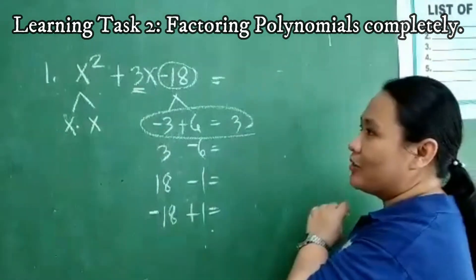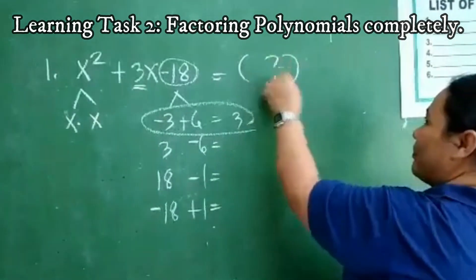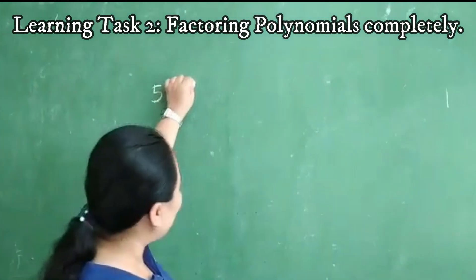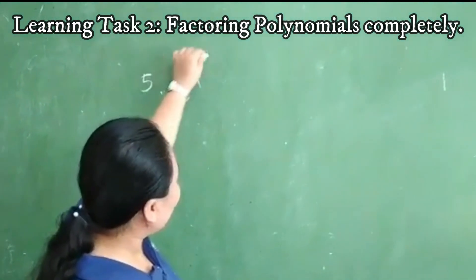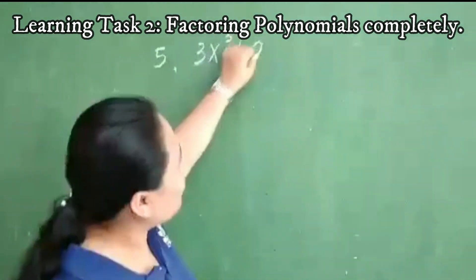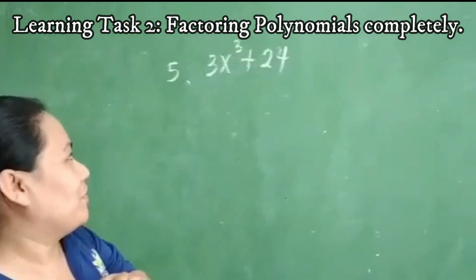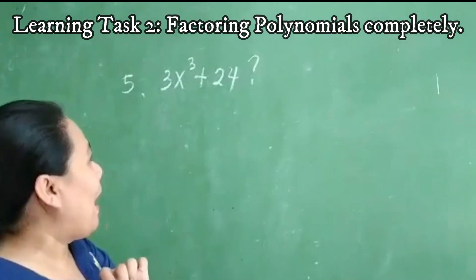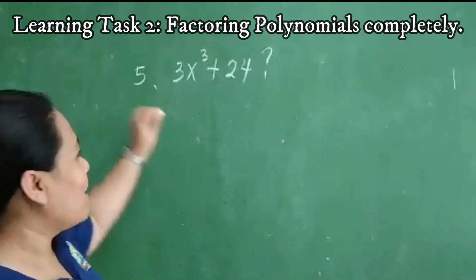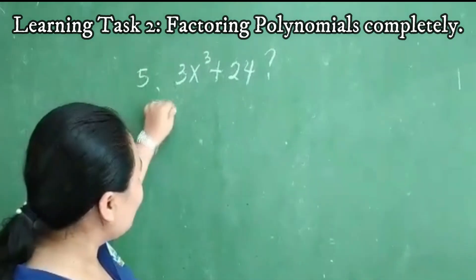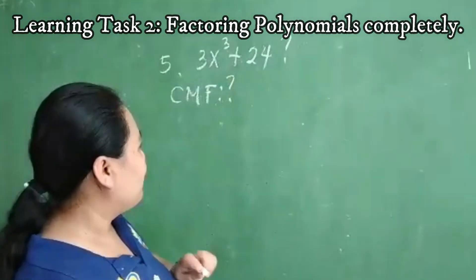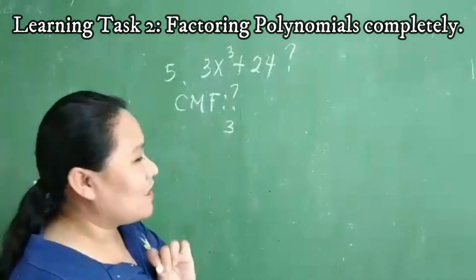Can you guess the answer? Under learning task number 2, we have number 5. The given is 3x cubed plus 24. What can you observe from the given expression? First, you need to get the CMF. What is the CMF? The CMF is positive 3.